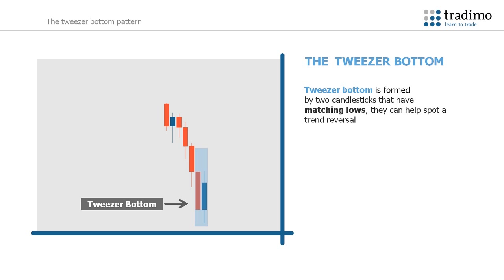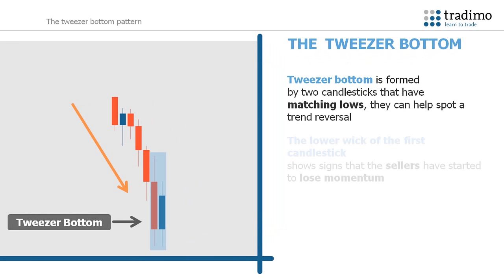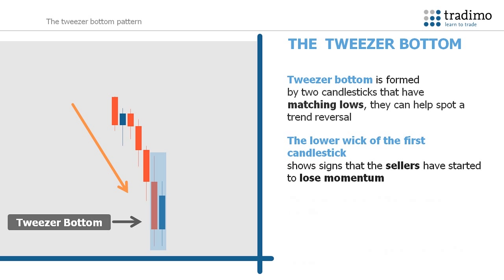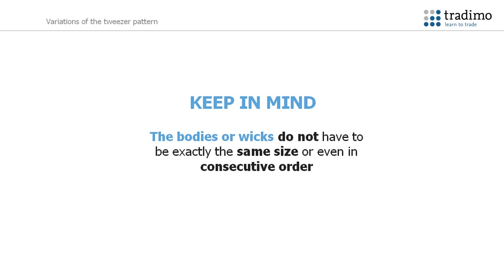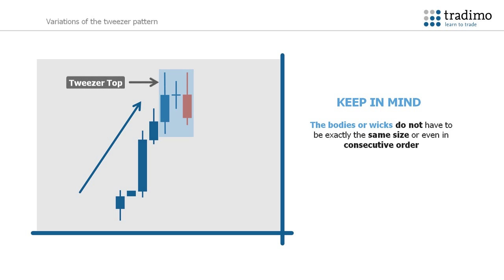Tweezer bottoms are formed by two candlesticks that have matching lows and can help spot a trend reversal. You can see in this example that the market is in a downtrend. The lower wick of the first candle shows signs of the sellers losing momentum. The lower wick of the second candlestick represents a second attempt by the sellers to continue pushing price down and then being overcome by the buyers. The wicks are of equal length and the lows are at the same level. These characteristics can signal the reversal of the downtrend to the upside. Keep in mind that the bodies or wicks do not have to be exactly the same size or even in consecutive order — here we see a tweezer pattern with a candlestick in between. The important aspect is two wicks with equal highs or lows, indicating that either the buyers or the sellers were eventually overcome after a trend, indicating a potential reversal.